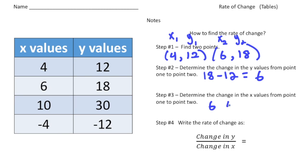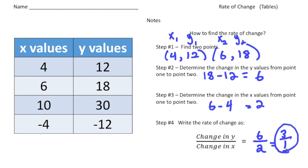6 minus 4 is 2. Step four: write the rate of change as a ratio of the change in y over the change in x. The change in y was 6 and the change in x was 2, giving 6 over 2, which reduces to 3 to 1. So the rate of change of this function is 3 to 1.